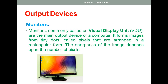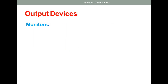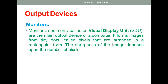Let us start with the first output device: the monitor. The monitor is an output device used to display information. Once data is input through various input devices and processed, it is displayed to the user. For this purpose we use a visible display unit, which means the monitor is also known as a Visual Display Unit (VDU).